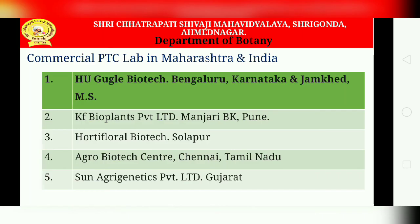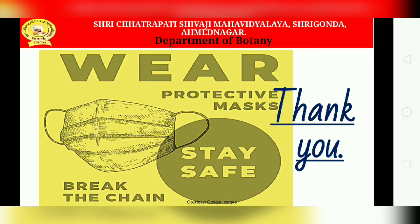Next is the Agro Biotech Center in Chennai, Tamil Nadu, which has been working in this field since 1990. Then there is Sun Agri Genesis Agri Genetics Private Limited in Gujarat, established in 1991. It is a pioneer tissue culture plant research and development center in Gujarat and the first Indian tissue culture laboratory with its own R&D, recognized by the Department of Scientific and Industrial Research (DSIR), Government of India, and accredited by the National Certification Systems for tissue culture raised plants.